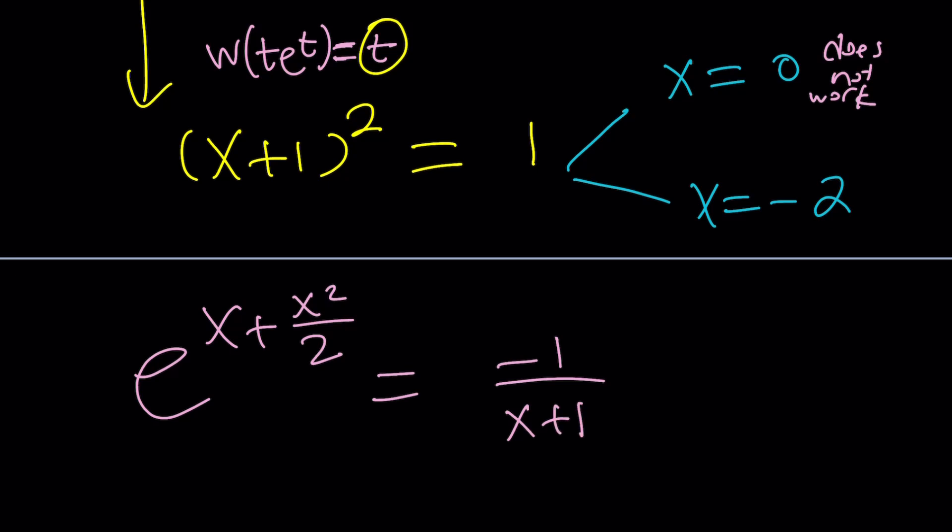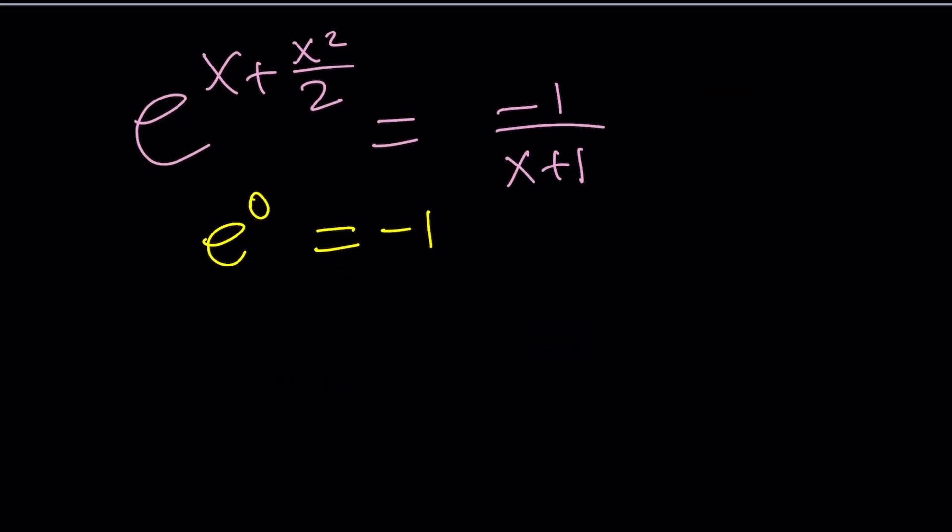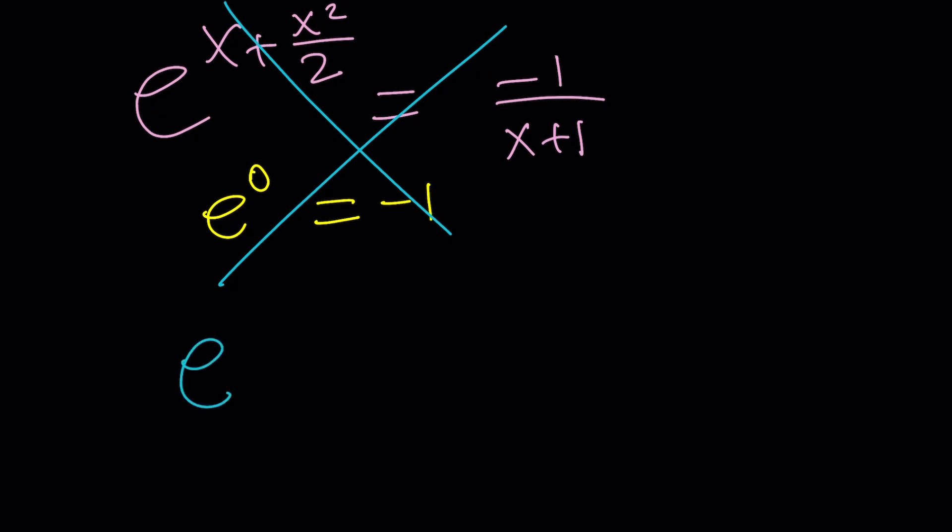This is going to give you e to the power 0 on the left-hand side. And on the right-hand side, it's going to give you negative 1. And we know that e to the power 0 does not equal negative 1, right? But negative 2 will give you the answer. How do I know that? I checked it for you. But let's go ahead and do it one more time.